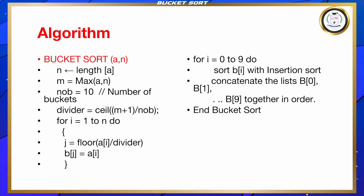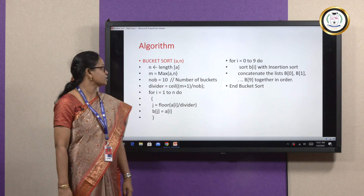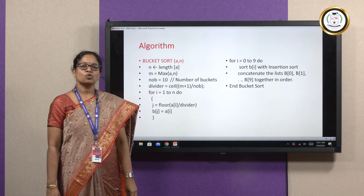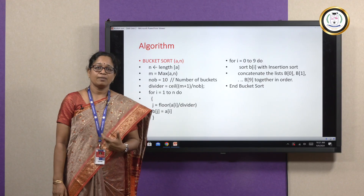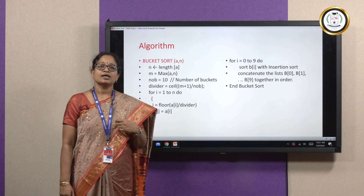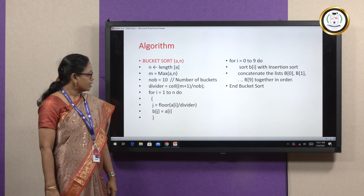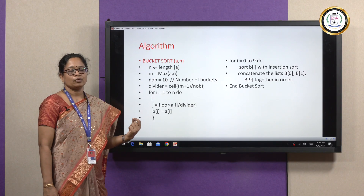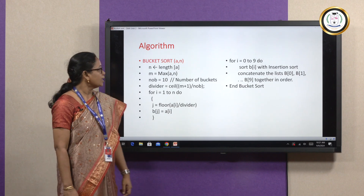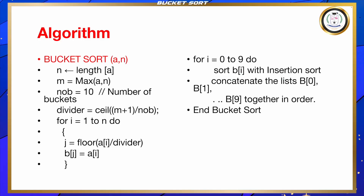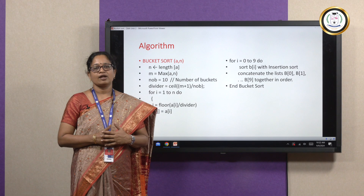Here is the algorithm for bucket sort. Bucket sort takes two parameters: one is the input array a, and the next one is n which is the number of elements. The length of the array is stored in variable n. The maximum of the given elements is stored in variable m, and the number of buckets is taken as 10. We calculate divider equal to ceil of (m plus 1) divided by number of buckets. Then using a for loop, we calculate the j value and place each element into a bucket. In the next for loop, we sort each bucket using insertion sort, then concatenate the list together in order to get a sorted array.